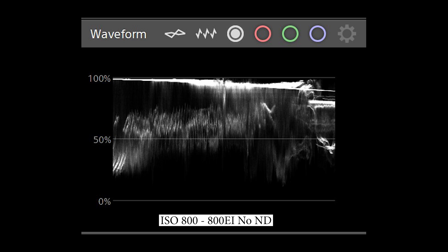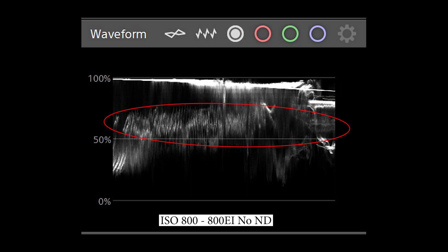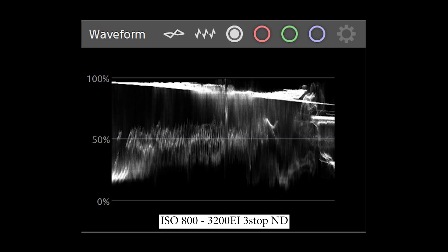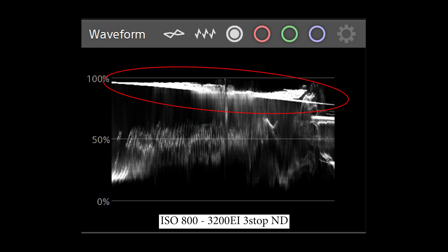Next, looking at our waveform: in the original clip, the highlights are right along the top of the 100% line, just barely scraping by, and our midtones are up above 50% — not where we want them to be. Introducing the ND filter brings our midtones back down, and by pushing to 3200 EI, it brings our highlights back up to where they should be, just underneath that clipping point — a much better, more even exposure.